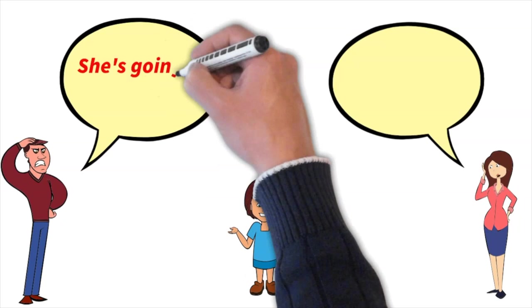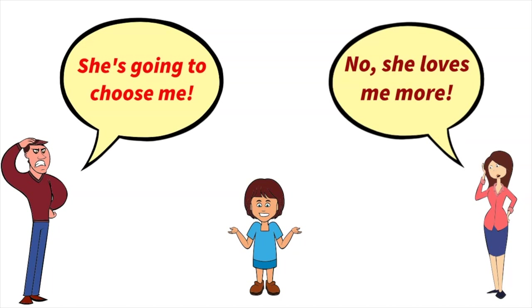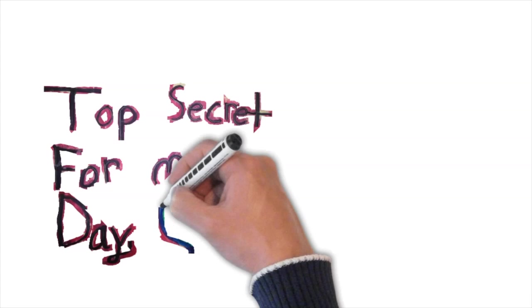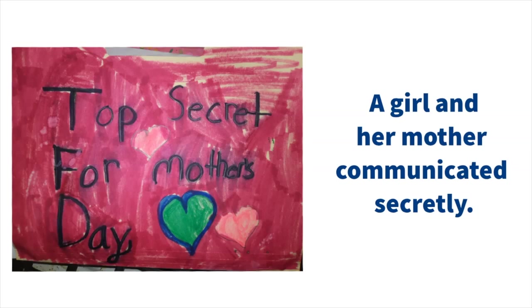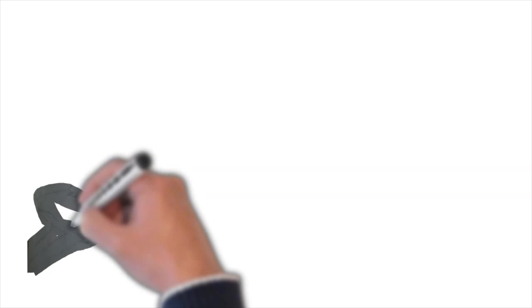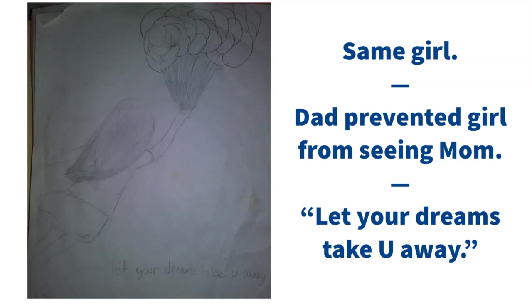That simply means it's hard for a person to hold two contradictory beliefs or feelings at the same time. A young girl with a loyalty conflict was living with her father and felt that she had to express love for her mother in top secret so as not to antagonize her father. Then the same girl who was prevented from seeing her mom drew herself looking out of the window, missing her. Then the same girl who was prevented from seeing her mom wrote, Let your dreams take you away.